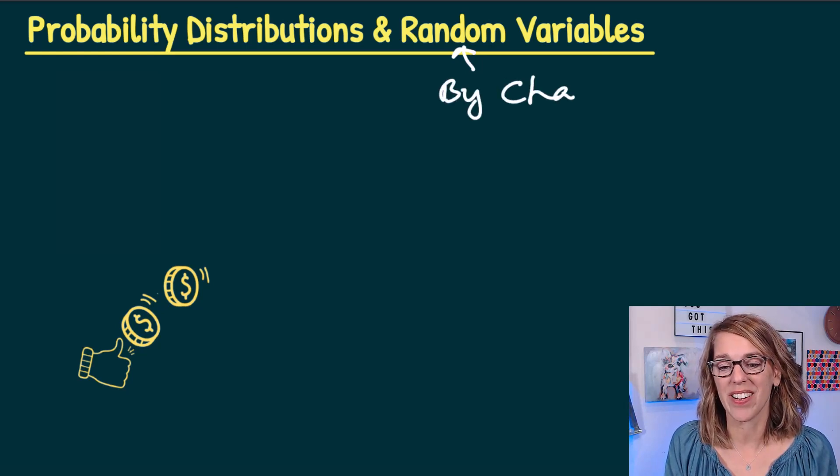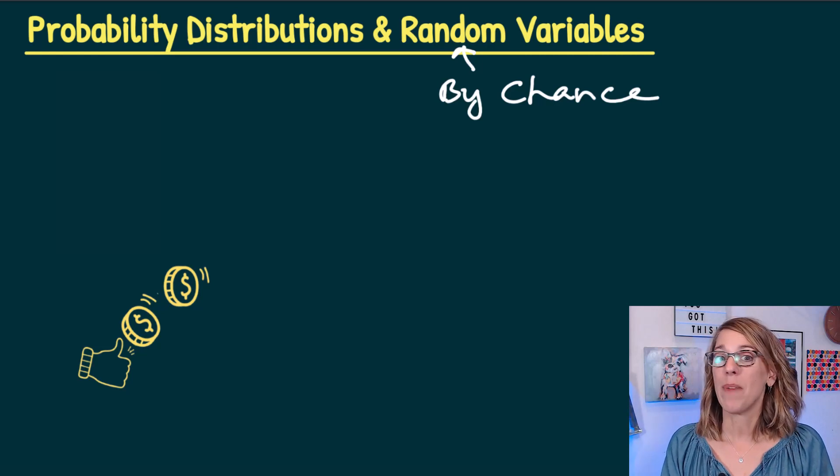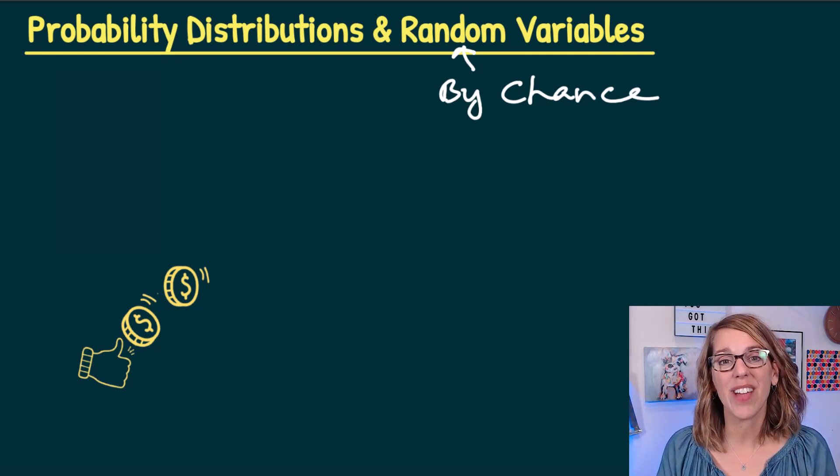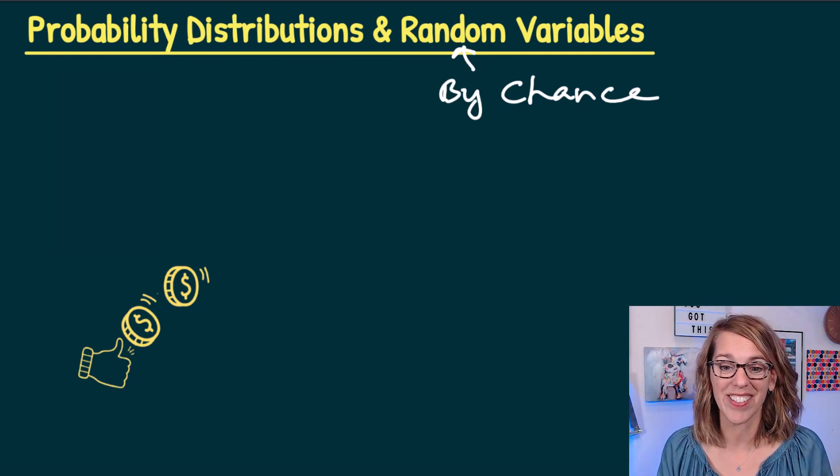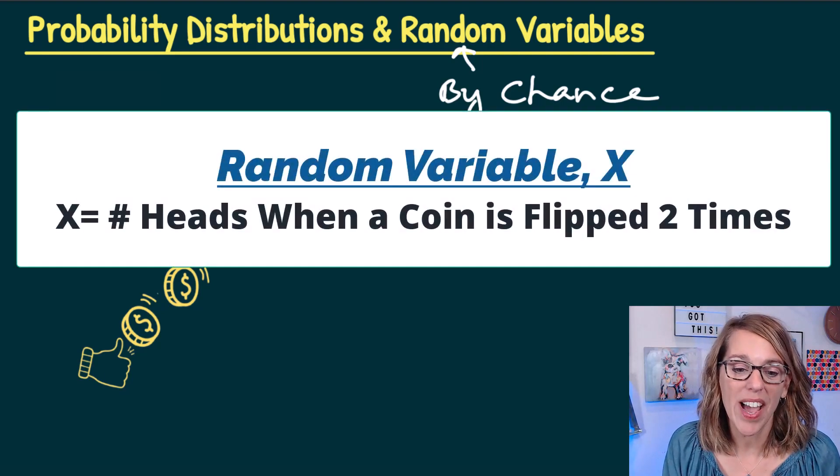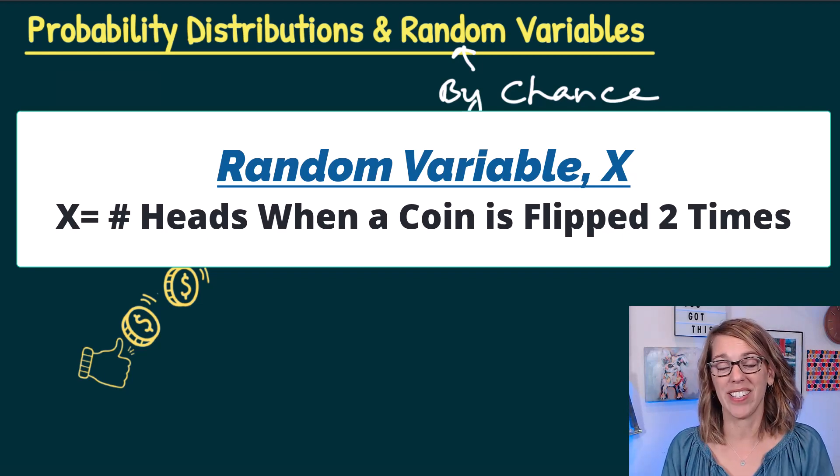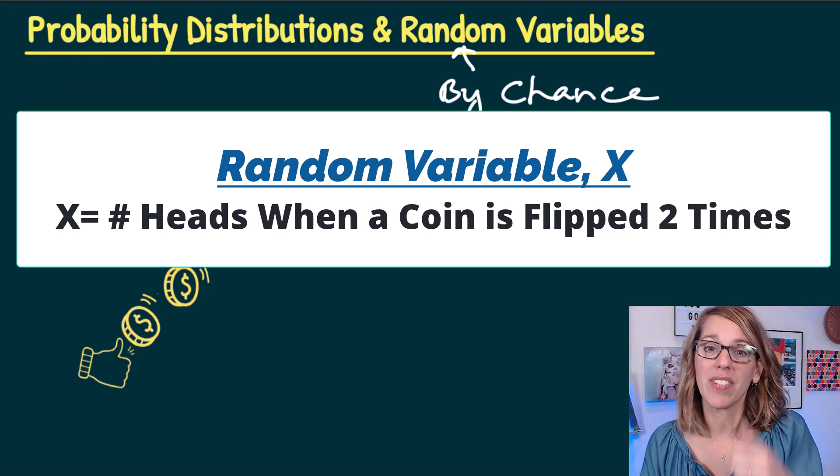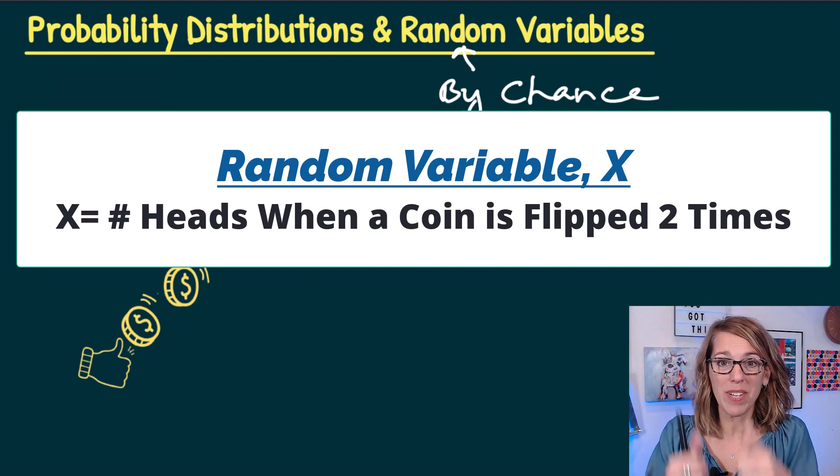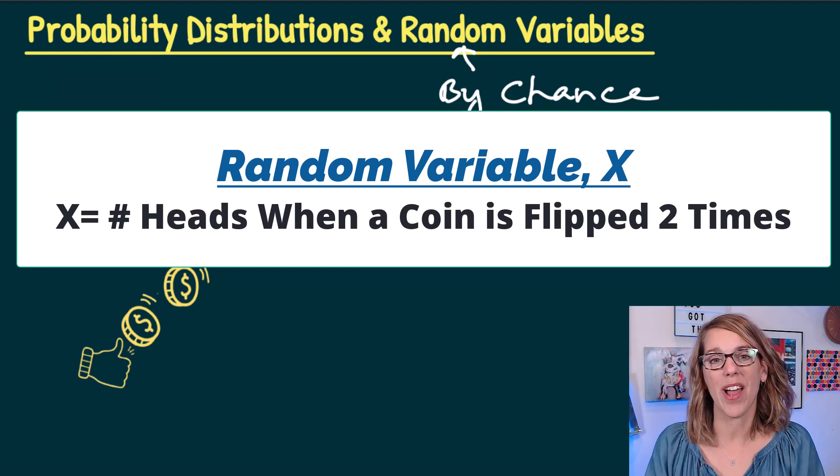So this example that I've got here of flipping a coin by chance is going to land on either heads or on tails. I'm going to define my random variable here to be the number of heads that we get when we flip a coin twice. Now this would be the same as flipping the same coin twice or flipping two coins and seeing what our outcomes are.